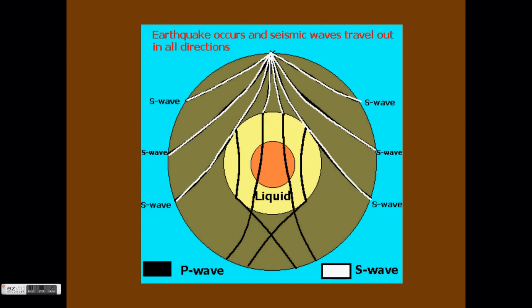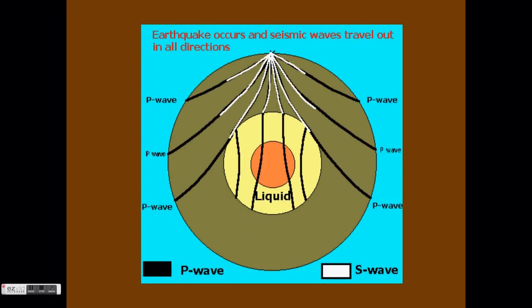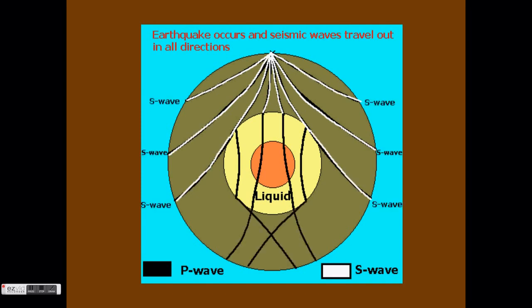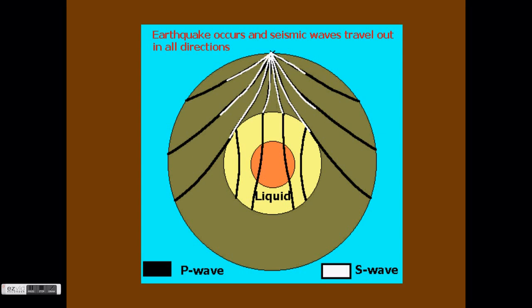As scientists began recording waves from earthquakes, they started noticing a pattern. It seemed as though the destructive S waves could not travel directly through the Earth. They could make it to the right and left from the earthquake, but not through. Scientists knew that the S waves could not travel through a liquid and concluded that the liquid core must be blocking these waves.